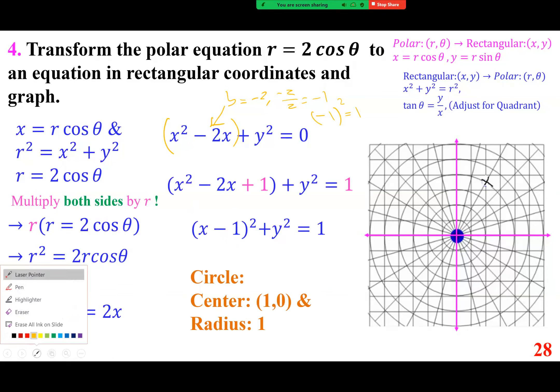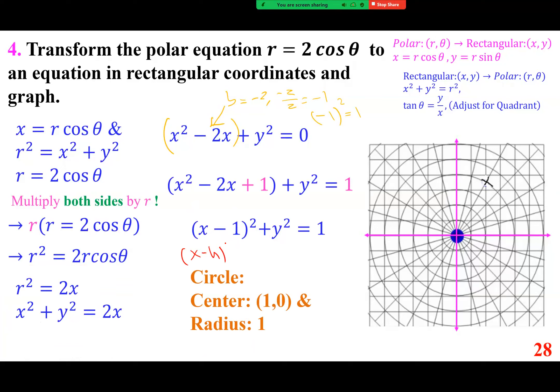Reminding you of the formula: x minus h squared plus y minus k squared equals r squared is the equation of a circle centered at h comma k. So this circle is centered at 1 comma 0, looking like that.